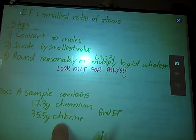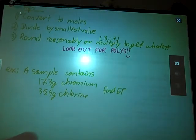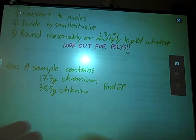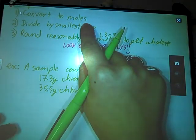But let's go ahead and try this one. Let's attempt to find the empirical formula for a sample containing 17.3 grams chromium and 35.5 grams of chlorine. So step one says to convert to moles.